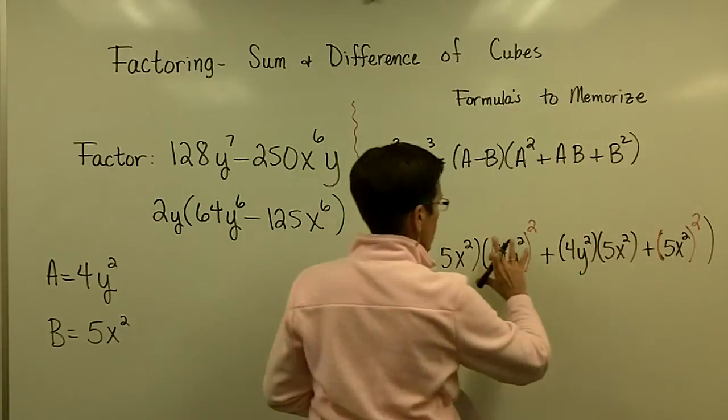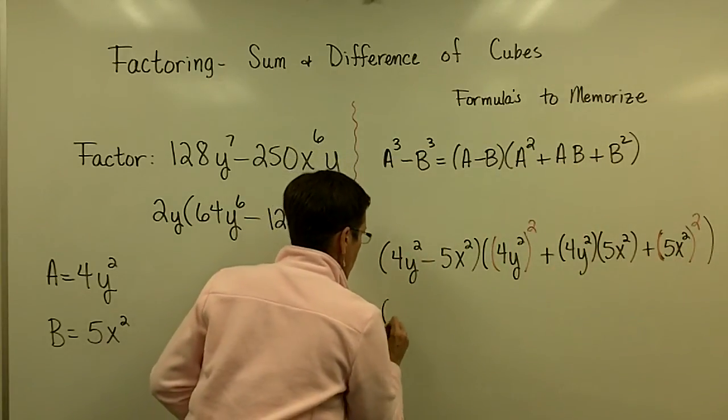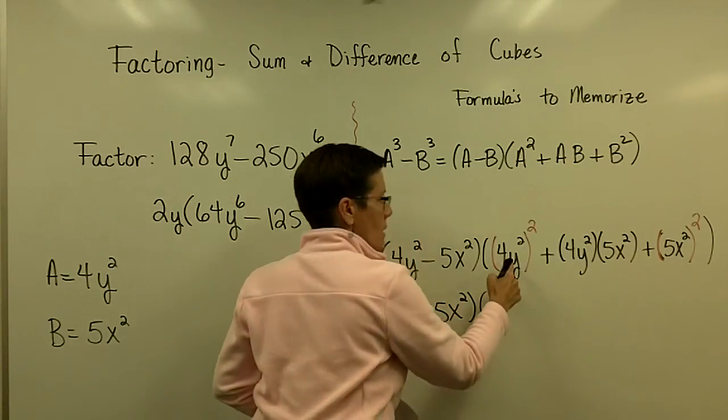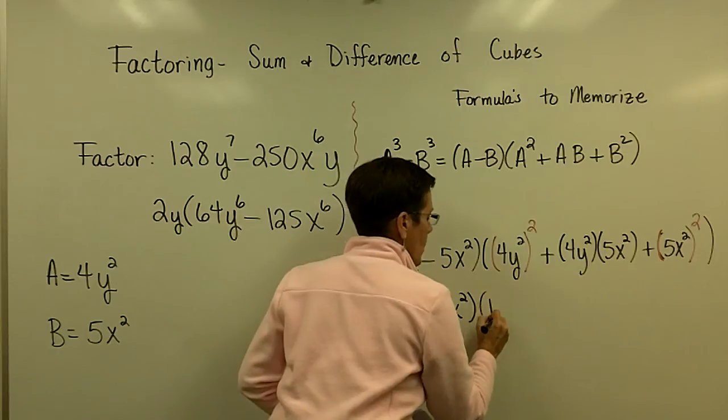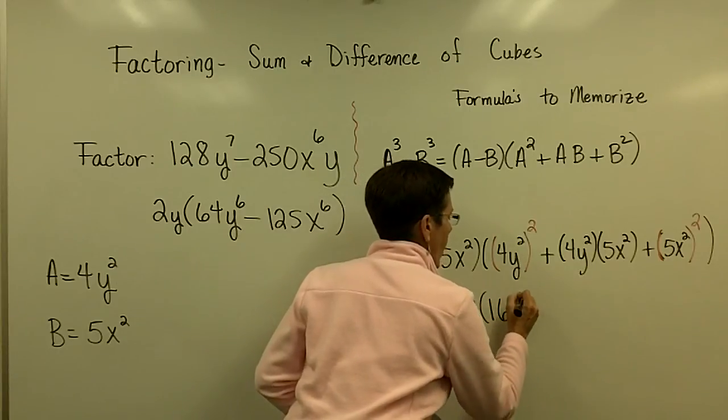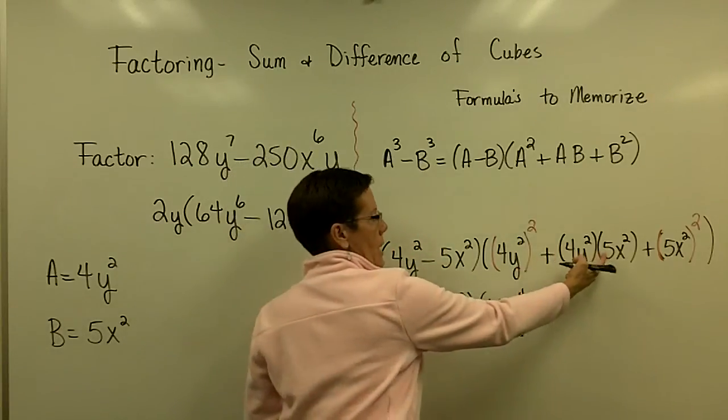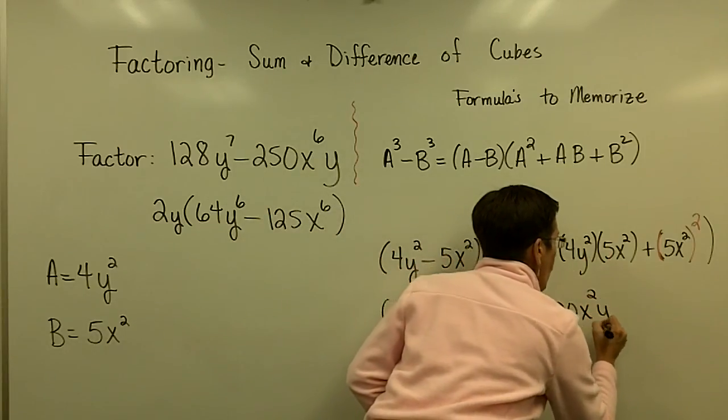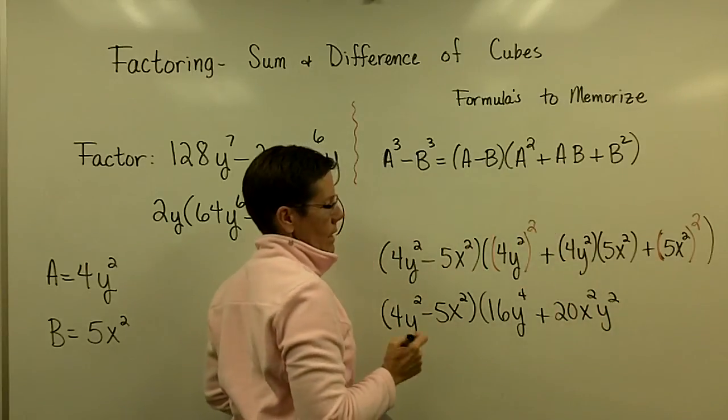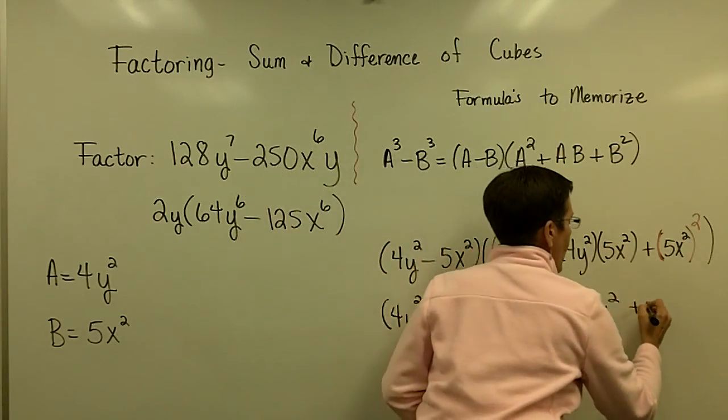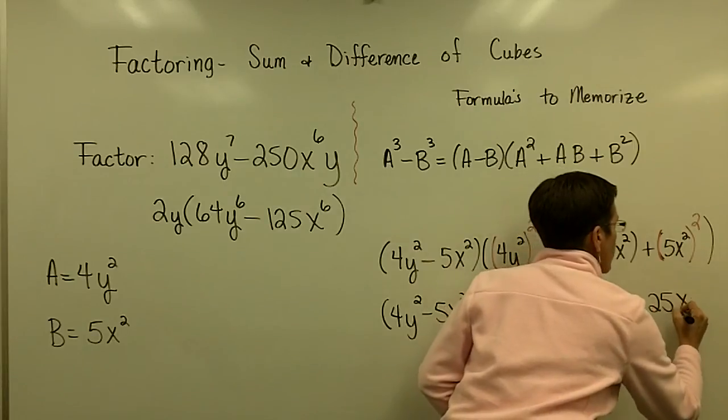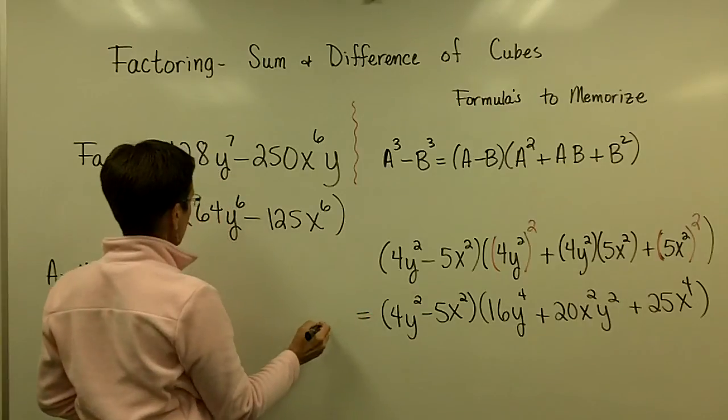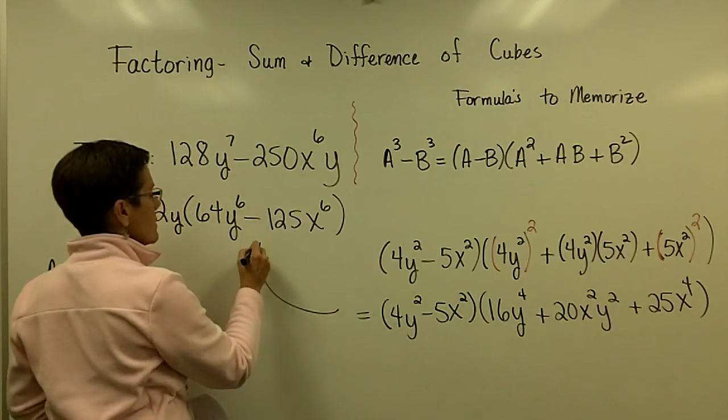This binomial is typically just fine: 4Y squared minus 5X squared. Then, 4Y squared times 4Y squared is 16Y to the fourth. 4 times 5 is 20 - we tend to put it in alphabetical order - 20X squared Y squared. And 5X squared times 5X squared is 25X to the fourth. This is my factored form of this statement right here.